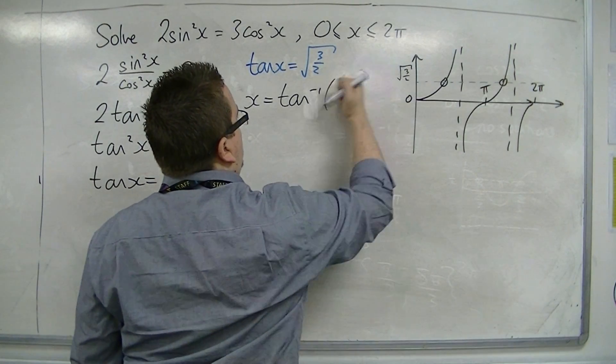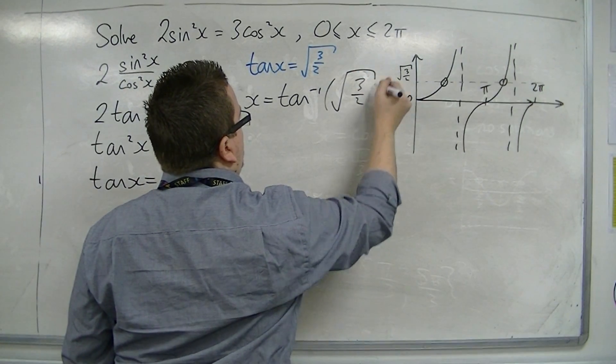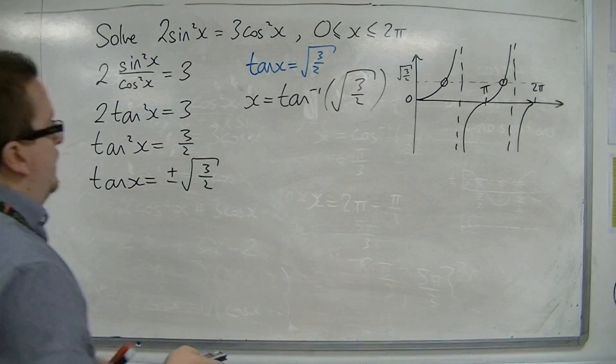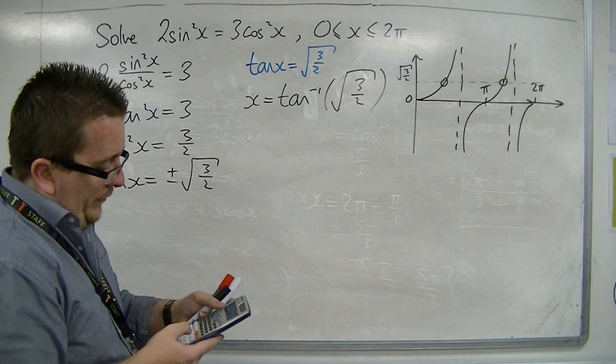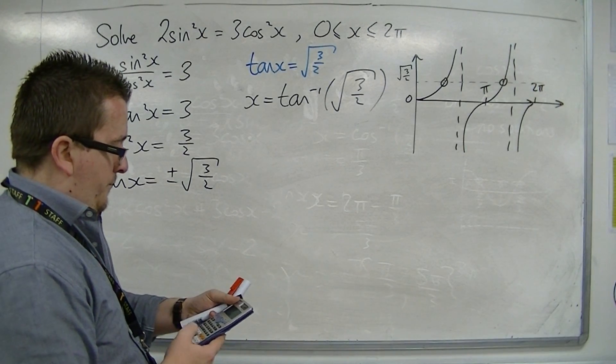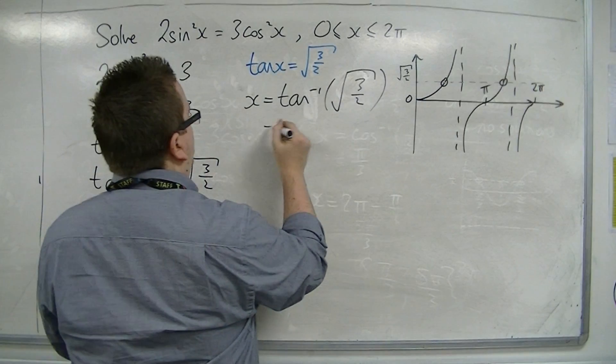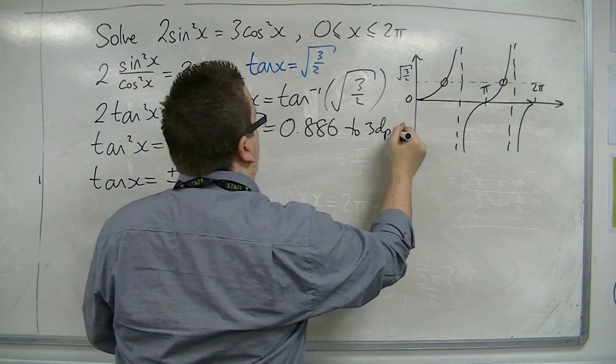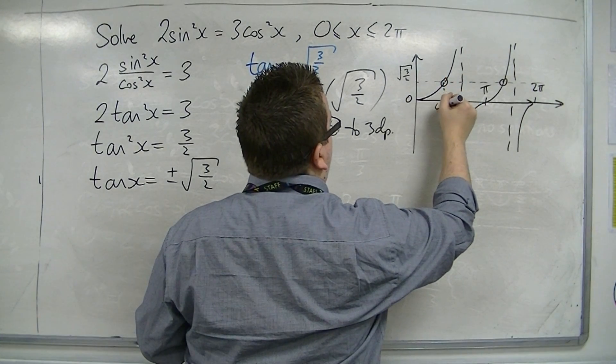In radians, root 3 over 2 is 0.886 to three decimal places. That is that solution there.